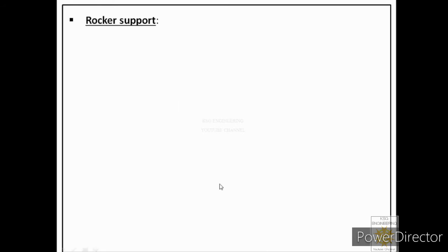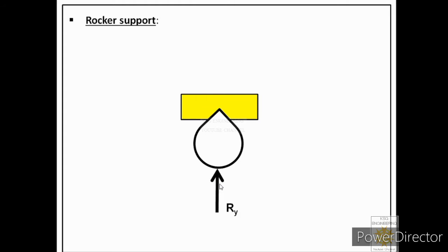A rocker support also supports bodies and has a curved surface at the bottom. Like roller supports, rocker supports also give only one type of body constraint — they do not allow motion normal to the surface, but the body can move along the surface or rotate.